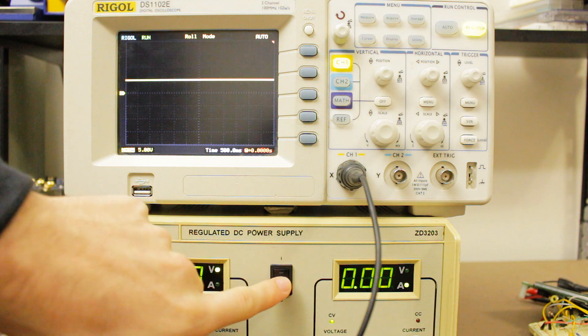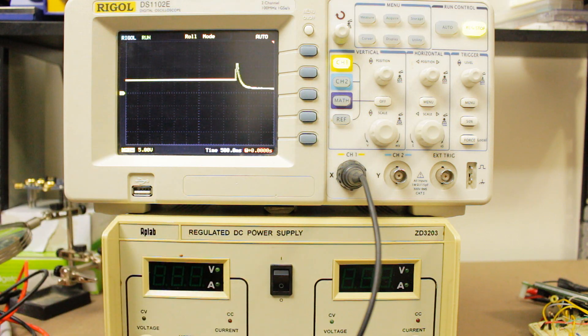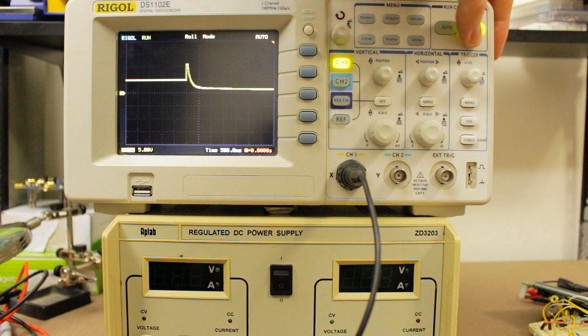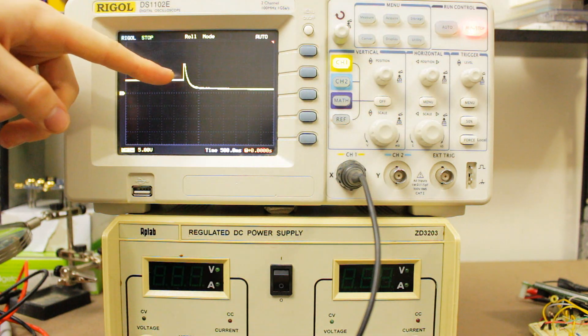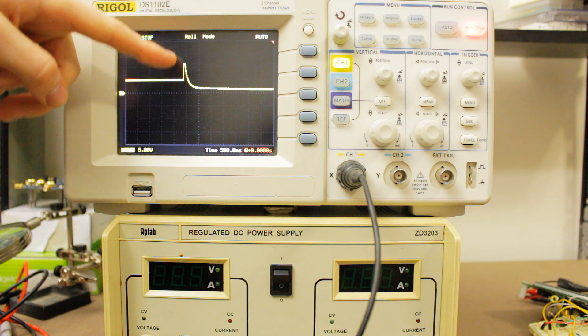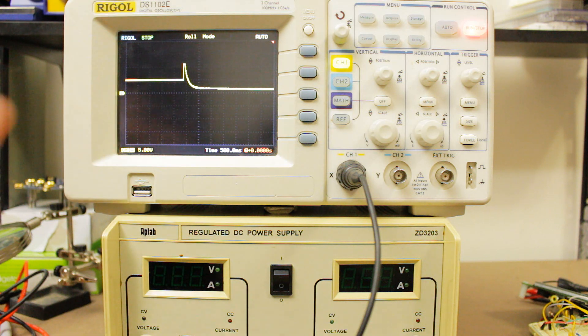But if I go ahead and turn it off, you can see this huge transient here. You've got your regulated 5V and as soon as I switch it off, this output is jumping up to 10V, which is crazy. If you want an easy way to blow up something that you've got plugged into this, then this is going to do it.